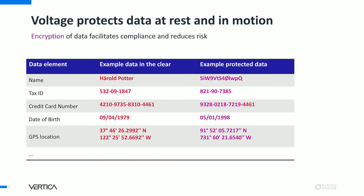Taking a look at Tax ID — there's an example of numbers for numbers. We can very quickly and easily keep data protected while maintaining the format. No schema changes are required when you want to protect that data. For credit card numbers, often the last four digits will be used to verify someone's identity, whether on an automated telephone system or with a customer service representative. We can keep that portion in the clear while protecting the entire string from breach. Dates, GPS location, customer ID, IP address — all of those data strings can be protected by Voltage Secure Data within Vertica.